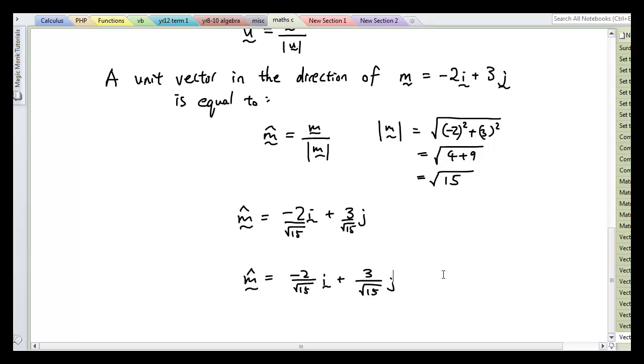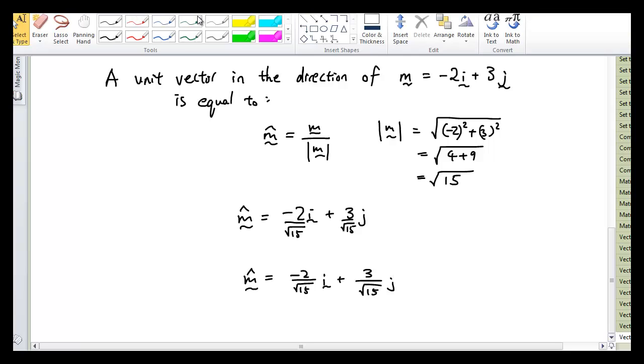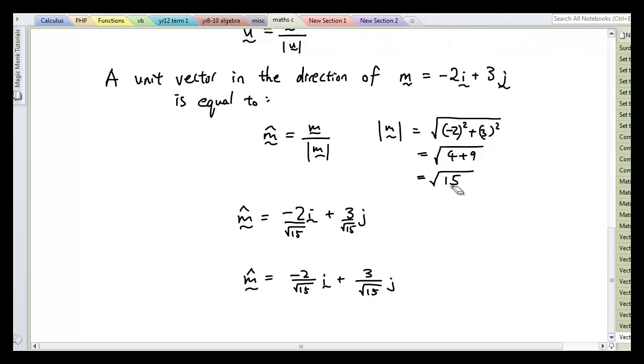Now if you guys are awake, you would see that I have made a little mistake. So 4 plus 9 is actually 13 not 15. So I'm going to go back and get rid of all of this. So it's 13 there, 13 there. Okay, so that's done.